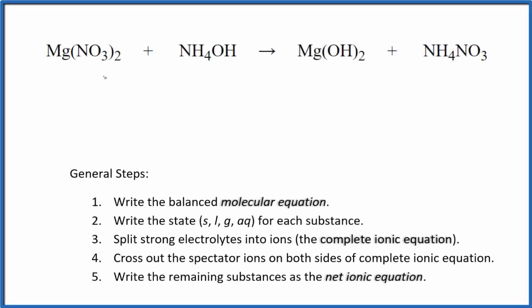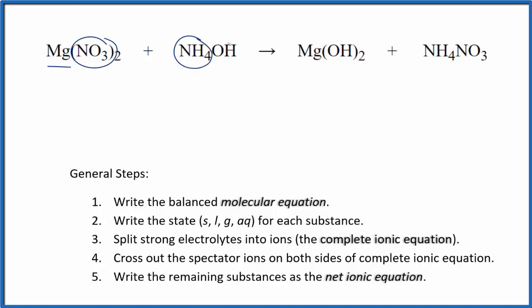To write the balanced net ionic equation for Mg(NO3)2 plus NH4OH — magnesium nitrate plus ammonium hydroxide — first we need to balance the molecular equation.